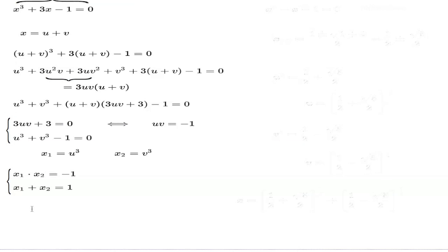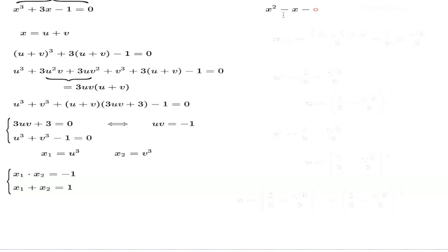This resembles Vieta's theorem very closely. X1 and X2 — the unknowns connected to U and V, which in turn are connected to the original unknown X — must be roots of a quadratic equation. That quadratic has a leading coefficient of 1, coefficient B equal to negative 1 because the sum equals 1, and C equal to negative 1 because the product equals negative 1.